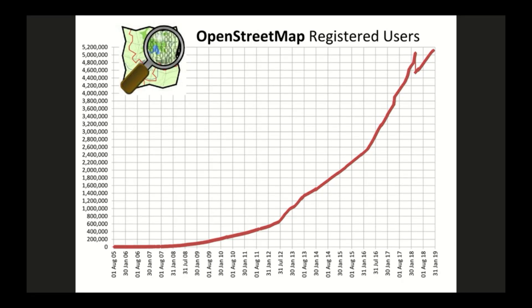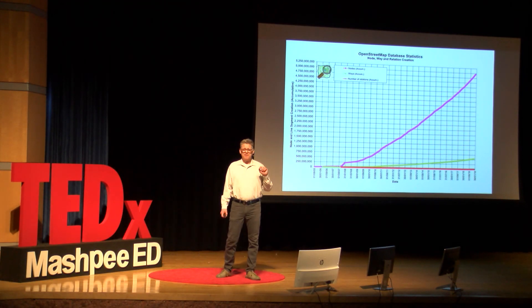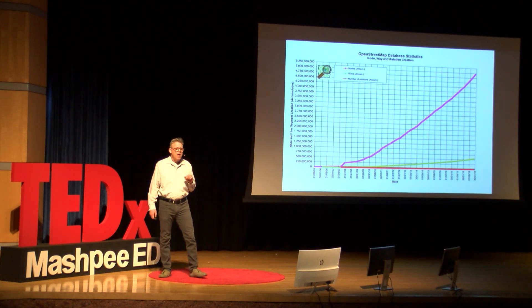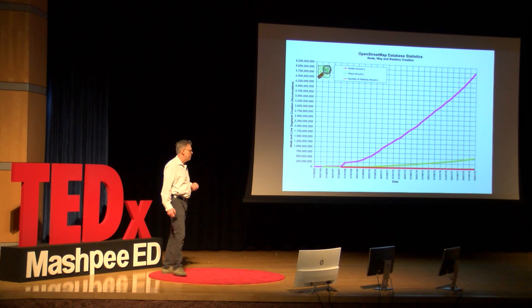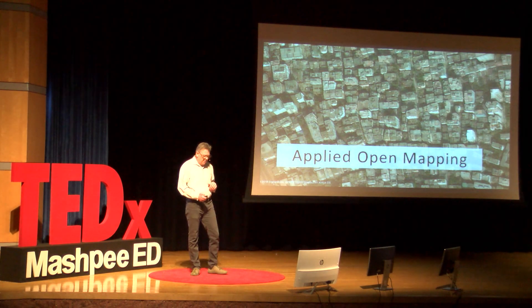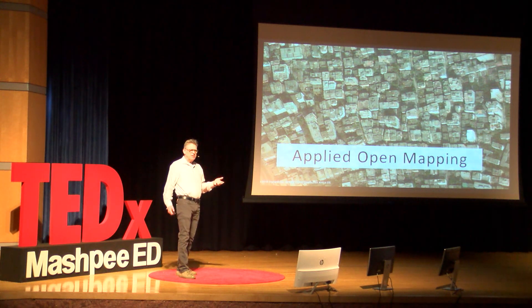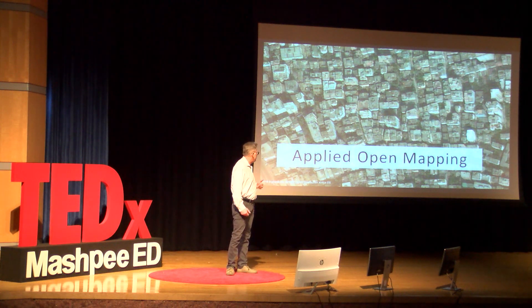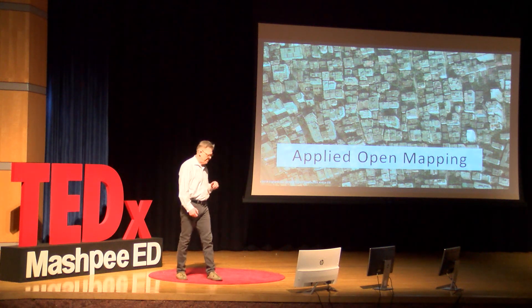We have 5 million users, 5 billion nodes — that's 5 billion dots on the map — and an astonishing 500 million ways, lines on the map and things like that. The interesting thing about this is that all of it is volunteer-contributed. This represents a huge amount of volunteer hours over the years that have been going into OpenStreetMap.